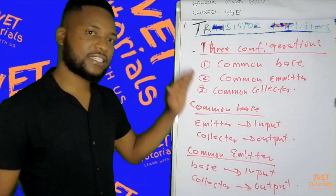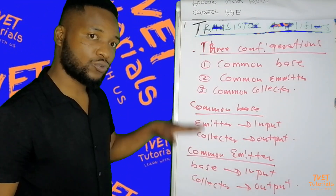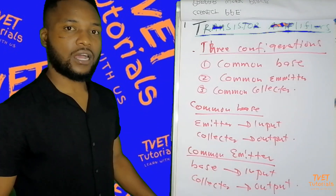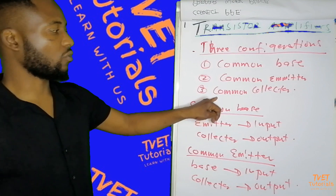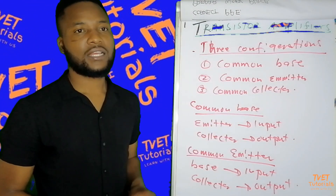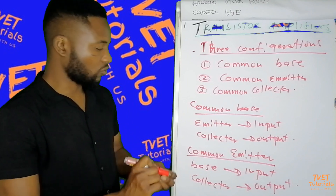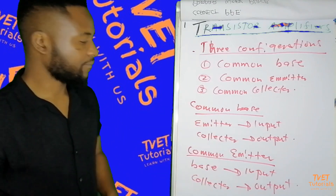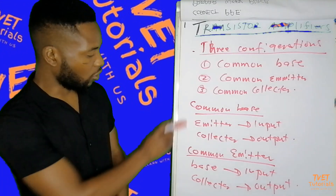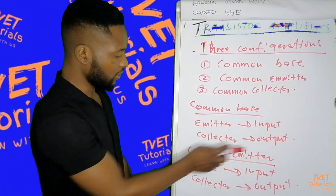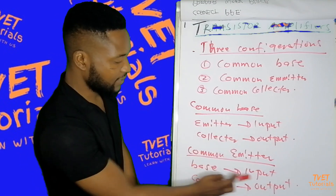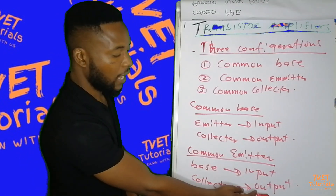So these are the things we have to remind ourselves of regarding these configurations. We are not going to perform any calculations for the common collector, so we are going to focus on the common base and the common emitter. To summarise: common base — emitter is input, collector is output. Common emitter — base is input, collector is output.